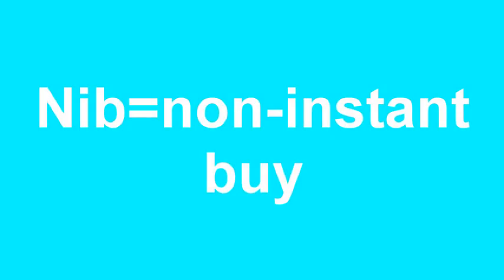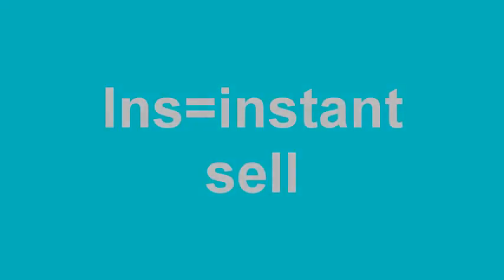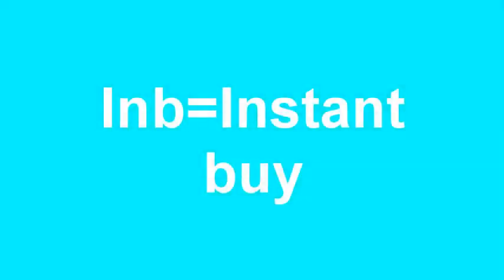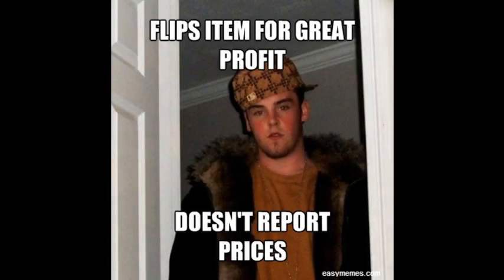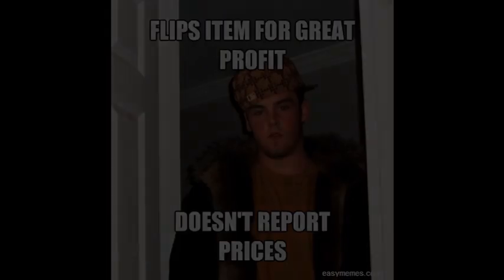If they say NIS, that means non-instant sell. If they say NIB, that's non-instant buy. And the opposite: IS is instant sell, and IB is instant buy. They use these a lot to report prices. If you're flipping and you instant buy something, or non-instant buy, or instant sell, or non-instant sell, you may want to report that by saying NIS, whatever item, whatever price — or if you instant sold it, or whatever.